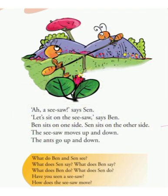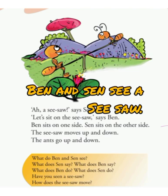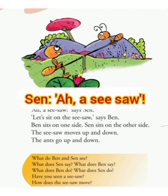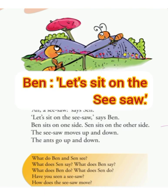What do Ben and Sen see there in the park? Yes, they see a seesaw. What does Sen say? Sen says, "A seesaw!" Then what does Ben say? Ben says, "Let's sit on the seesaw."